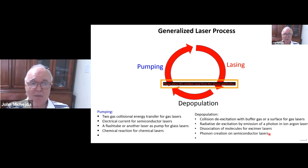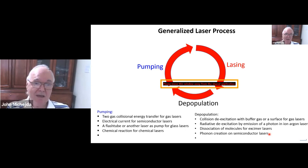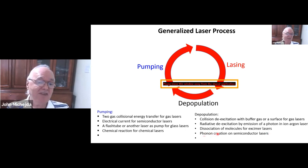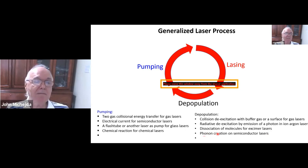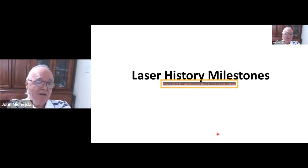Another way of depopulating lower levels is by phonon creation — creating heat — such as in a laser diode.